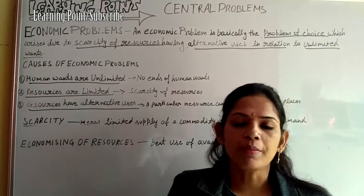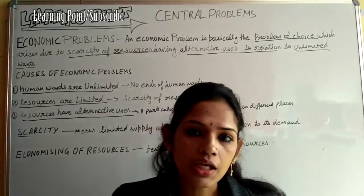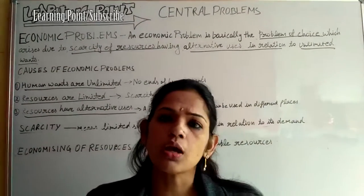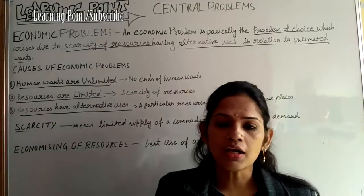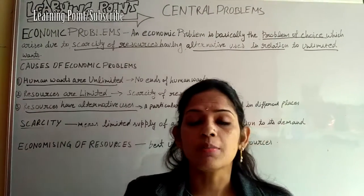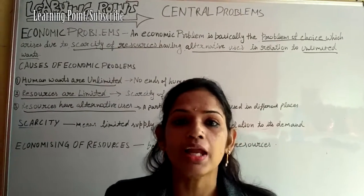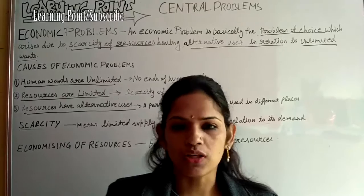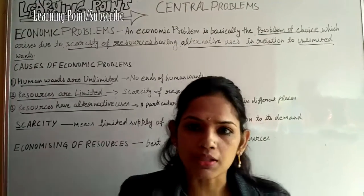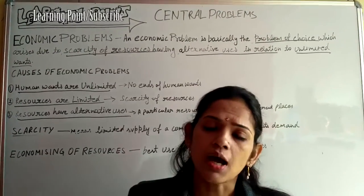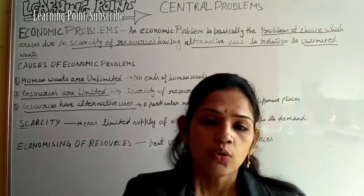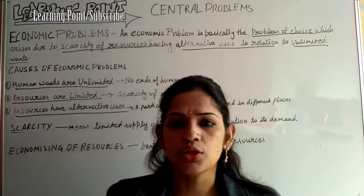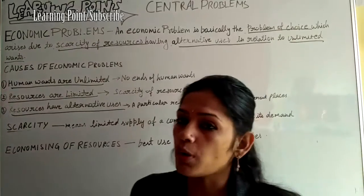For example, take electricity — its production and supply are limited, but its uses are in the domestic sector, industrial sector, and transportation sector, so its demand is unlimited. Similarly, take land — if you have a piece of land, you can make a home, hospital, school, or a park. You have to decide how to use it. These are alternative uses, which creates the problem of choice.